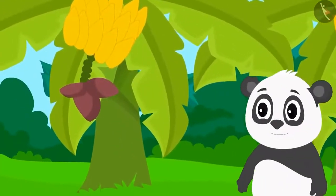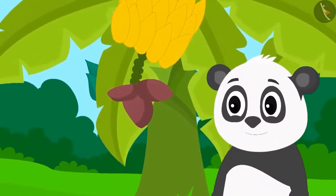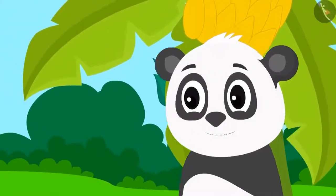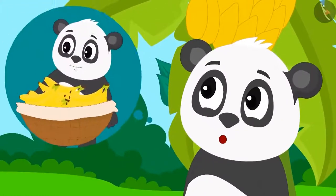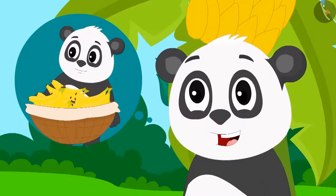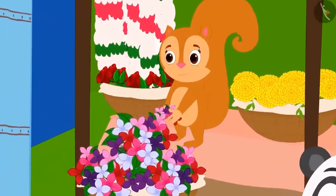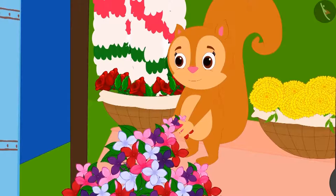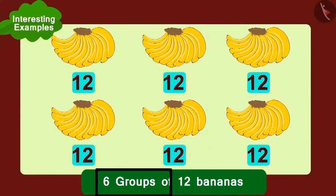Golu Panda's banana orchards reaped a good harvest this season. He thought that he can earn a lot of money by selling these bananas in the market. At the same time, Chanda Squirrel too had set up her flower stall. Golu had arranged six groups of twelve bananas each in this way. Children, can you write the number of bananas Golu had in the form of multiplication?